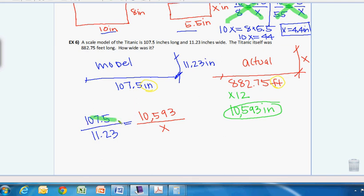10,593 compared to X. And then I want to cross multiply so I can solve. So I have 107.5X is equal to, when you multiply 11.23, get the calculator.